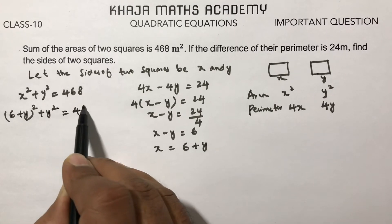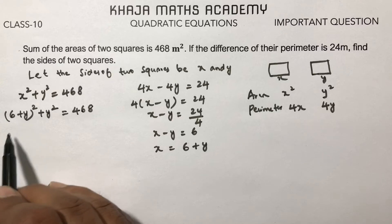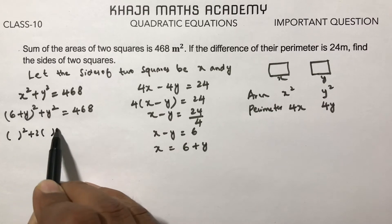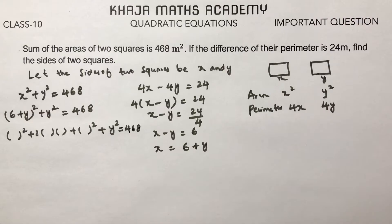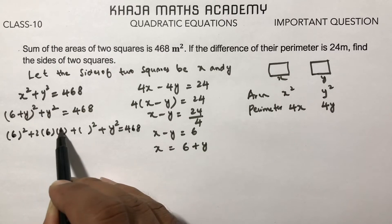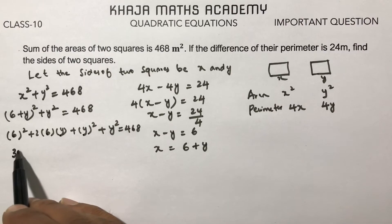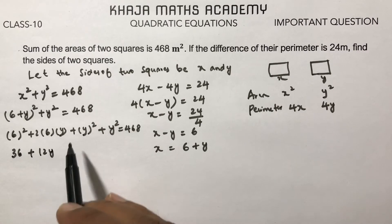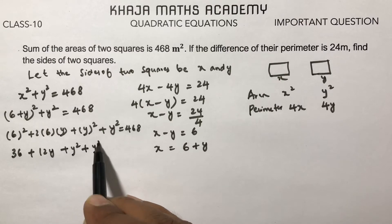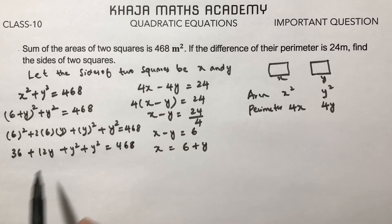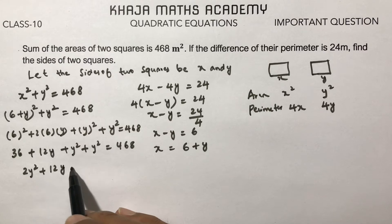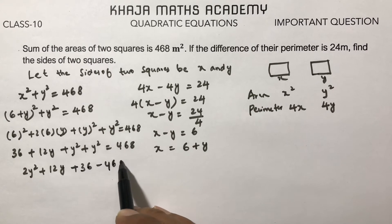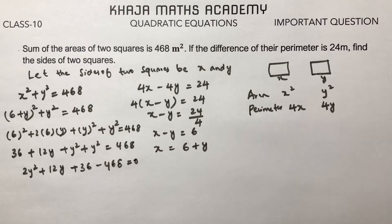Expanding using the identity (a + b)² = a² + 2ab + b²: we get 6² + 2·6·y + y² + y² = 468, which gives 36 + 12y + y² + y² = 468.